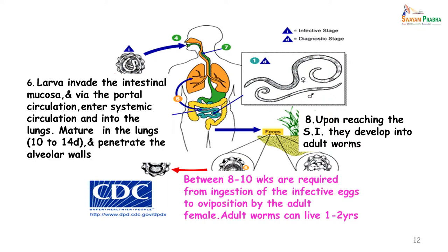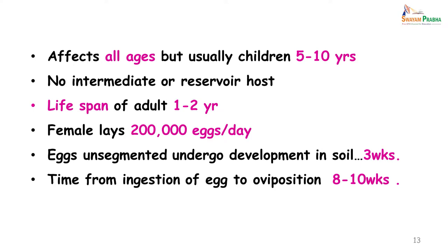After a host has ingested the egg, it will take about 2 to 2 and a half months before the adult female can produce eggs. If this adult worm has not been gotten rid of, it can live for up to 1 to 2 years in the host's intestine. Ascariasis affects all ages, usually children 5 to 10 years. There is no intermediate or reservoir host. The female lays about 2 lakh eggs per day. The eggs undergo development in the soil for up to 3 weeks after which they are infective.